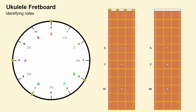Now consider the problem of identifying the note corresponding to a fret of a given string on the fretboard. The solution to this problem allows us to identify the fingerings of scales and chords along the fretboard and their transcription to the staff. The proposed solution is easier: simply starting from the position occupied by the note of the open string, we advance on the clock face as many hours as the number of the fret considered. The note to identify will then be the one corresponding to the end of this path on the clock face.